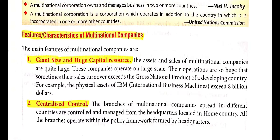The assets and sales of multinational companies are quite large. These companies operate on a large scale — their operations are so huge that sometimes their sales turnover exceeds the gross national product (GDP) of a developing country. For example, the physical assets of IBM (International Business Machines) exceed 8 billion dollars.